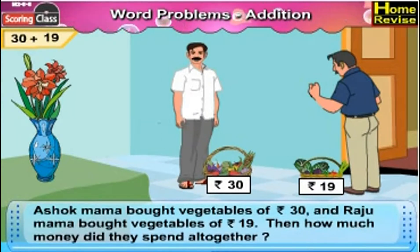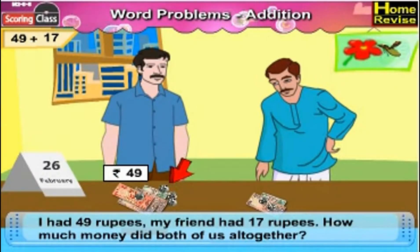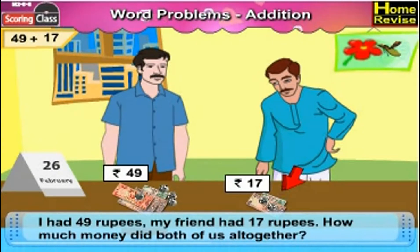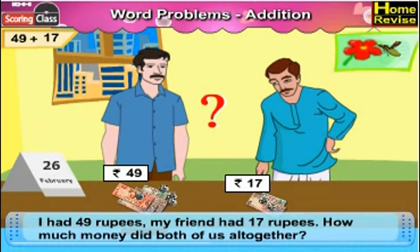Next is 49 plus 17. How much money did both of us have altogether?